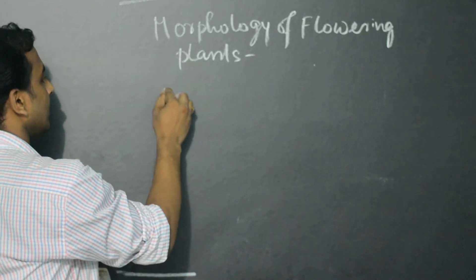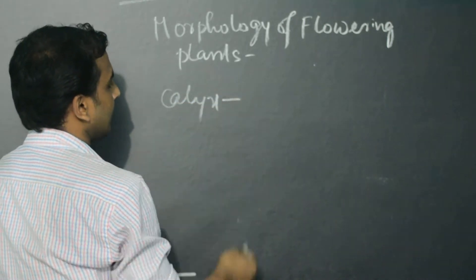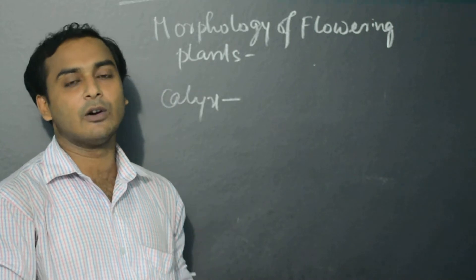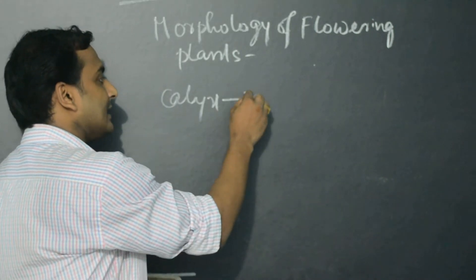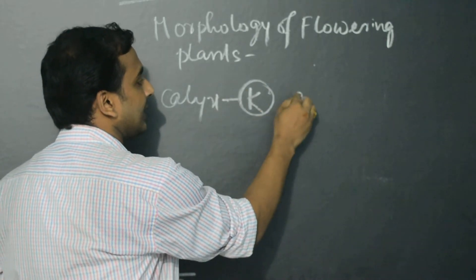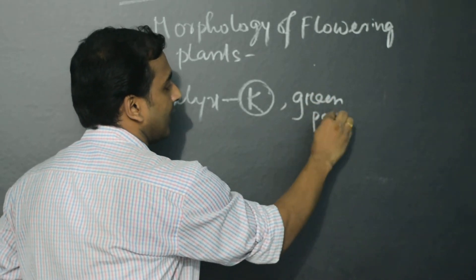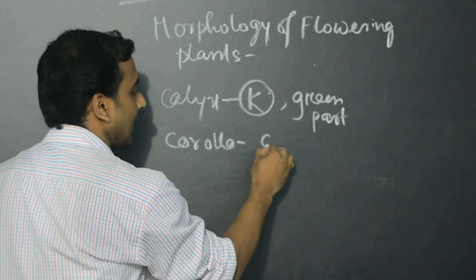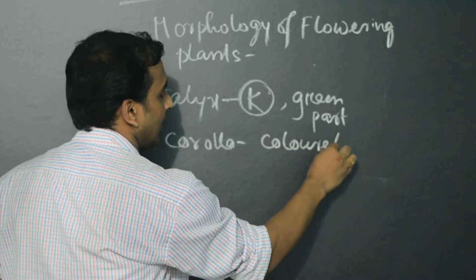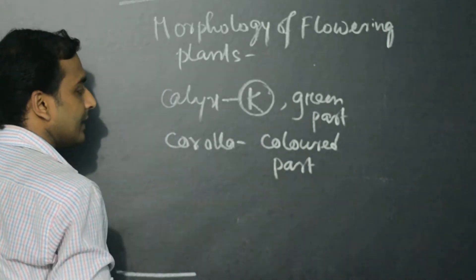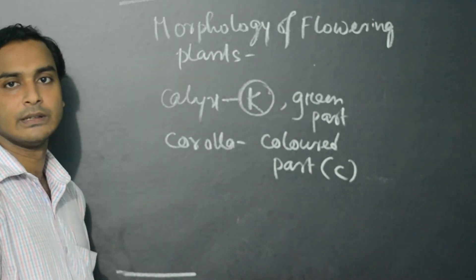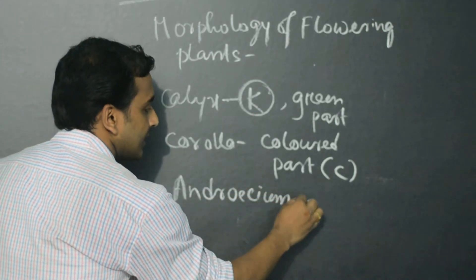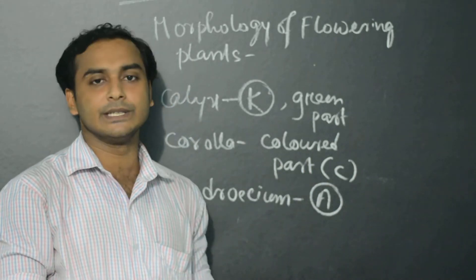The next portion: what is Calyx? Calyx is the green part of a flower — the outermost whorl of a flower. Its symbol is K. Corolla means the colored part of a flower, and its symbol is C. Androecium is the male reproductive part of a flower, and its symbol is capital A.